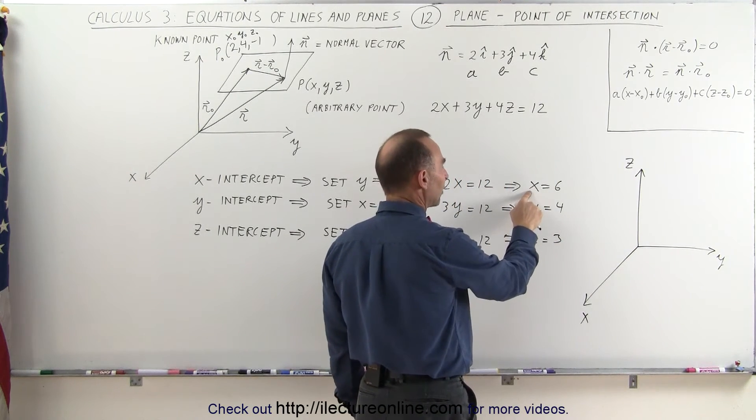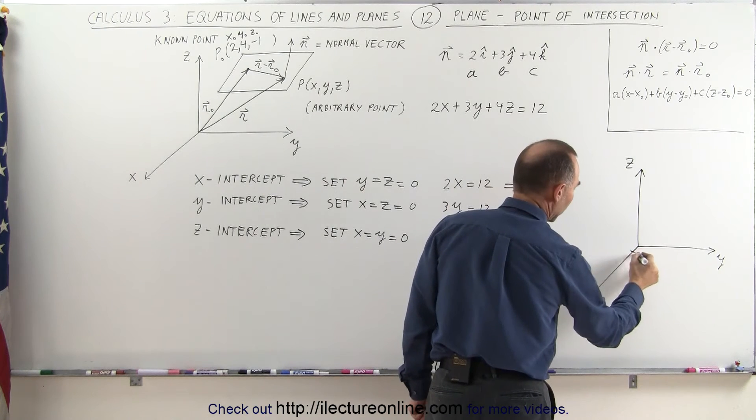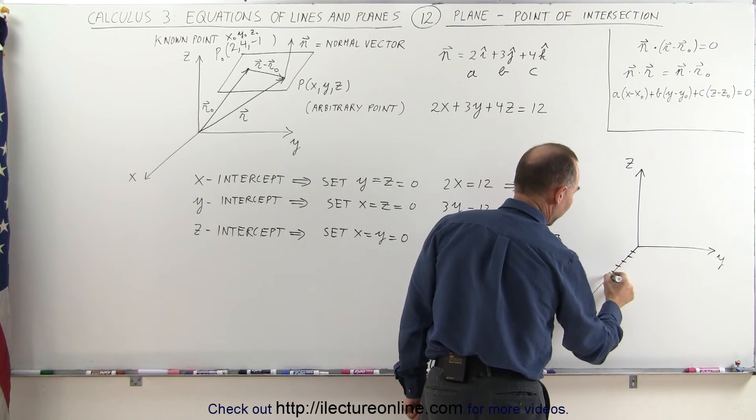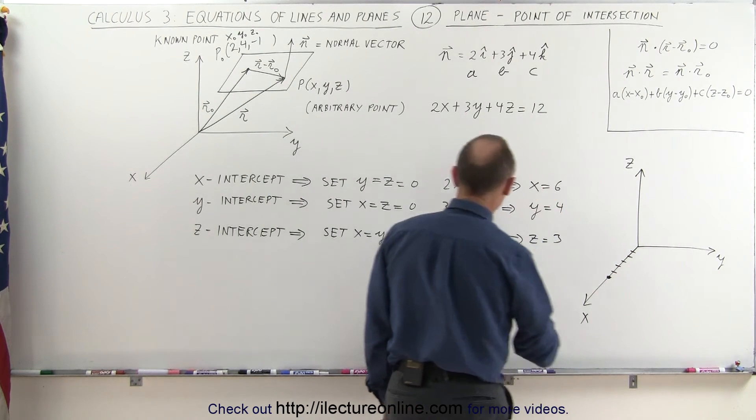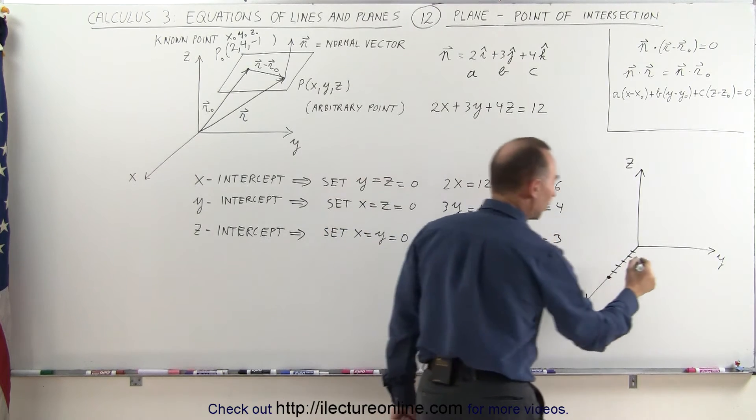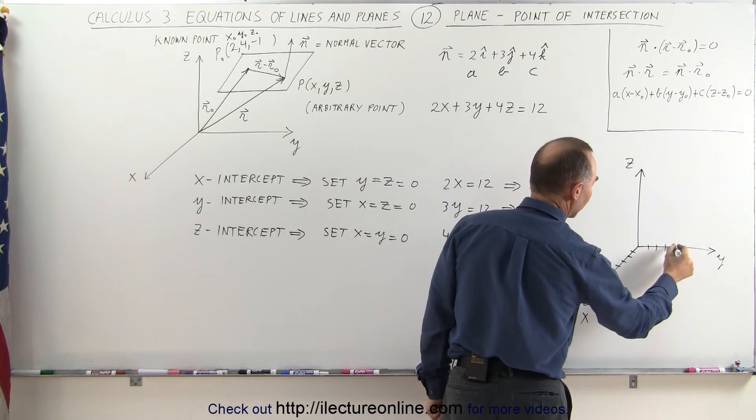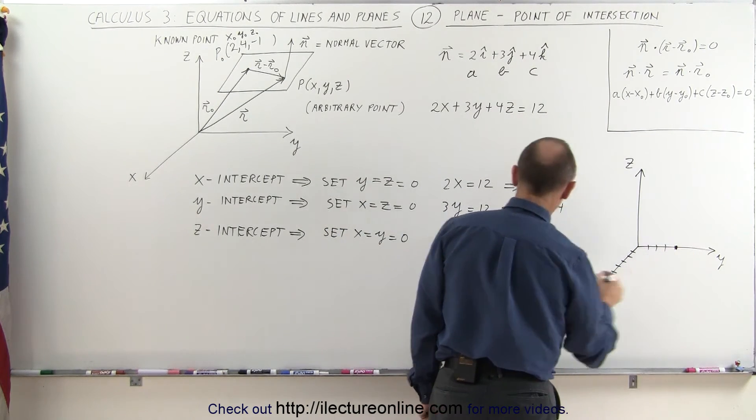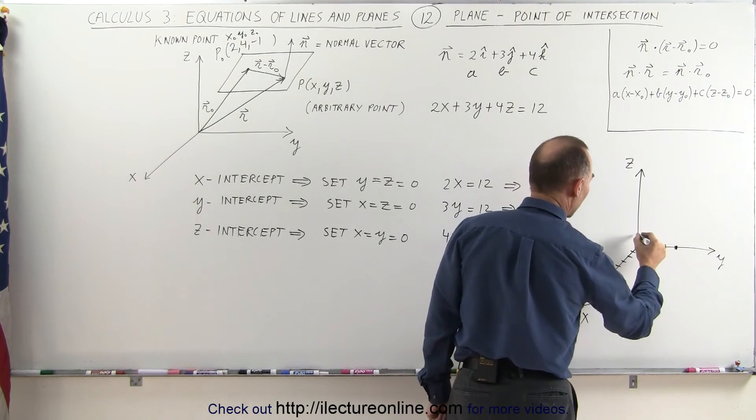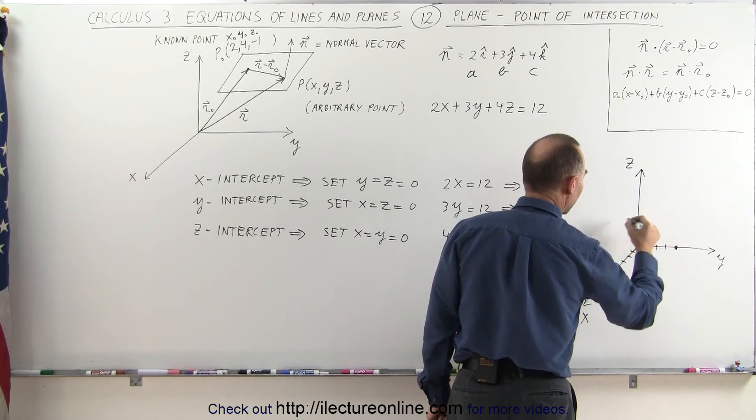First we find the x-intercept at x equals six, that's right there. Now we find the y-intercept at y equals four. And finally, the z-intercept at z equals three, right there.